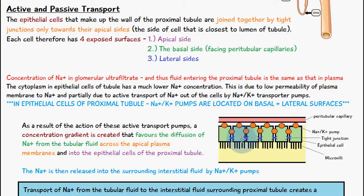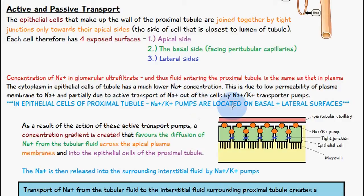The concentration of sodium ions in the glomerular ultrafiltrate entering the proximal tubule is the same as in plasma. However, the cytoplasm of the epithelial cells has a much lower sodium ion concentration. This is due to the low permeability of the plasma membrane to sodium ions and partially due to active transport of sodium ions out of the cells by sodium-potassium pumps — shown as orange circles — which are located on the basal and lateral surfaces of the epithelial cells.